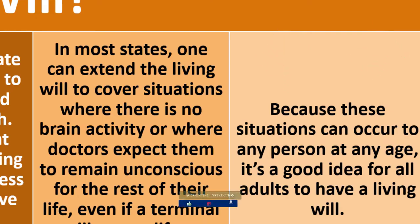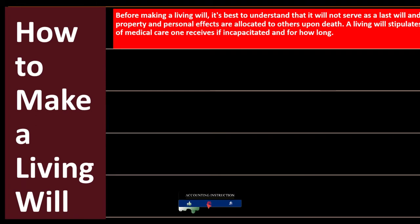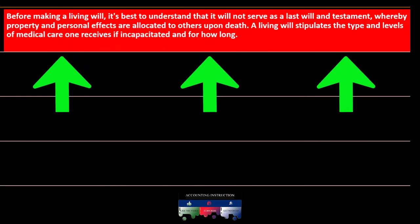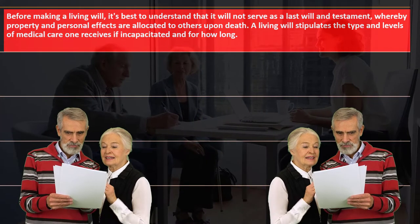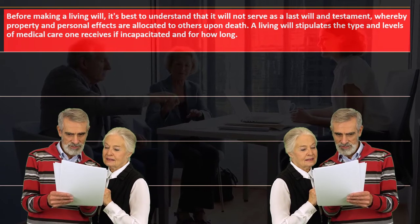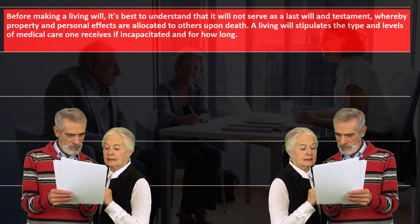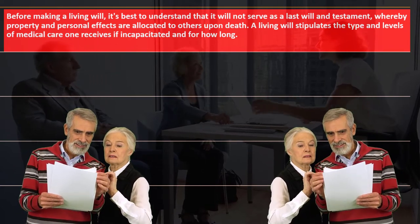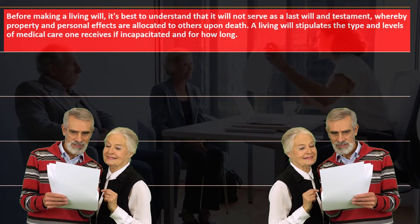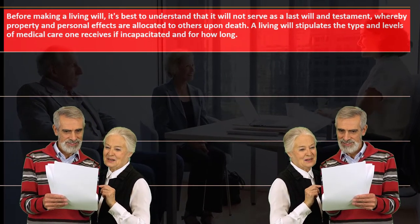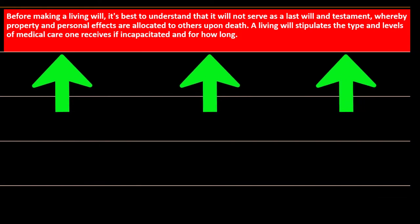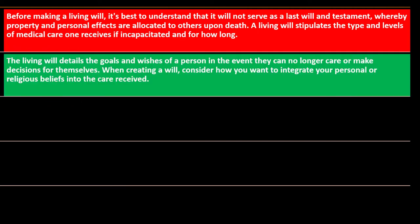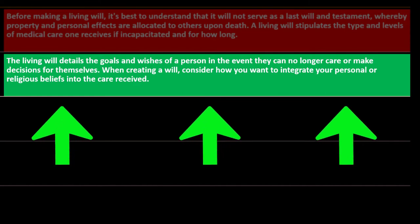Because these situations can occur to any person at any age, it's a good idea for all adults to have a living will. Before making a living will, understand that it will not serve as a last will and testament, whereby property and personal effects are allocated to others upon death. A living will stipulates the type and levels of medical care one receives if incapacitated, and for how long. The living will details the goals and wishes of a person in the event they can no longer care for or make decisions for themselves.